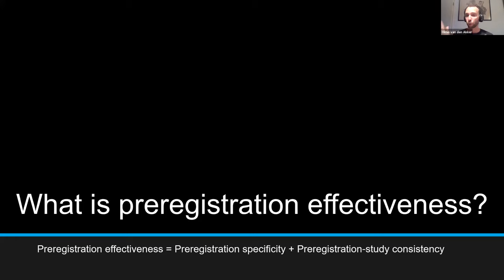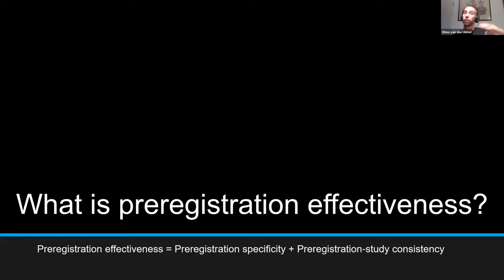There's also pre-registration–study consistency: what you plan in the pre-registration should match what you actually do in your study. We need both. If the pre-registration is very detailed but you then do other things, the benefit is lost. Likewise, if you have high consistency but only pre-register one hypothesis without specifying how to test it, it's also not really effective. So we need both these elements.